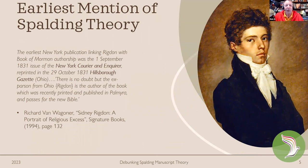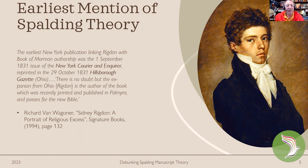The earliest mention of the Spalding Theory was in the September 1st, 1831 issue of the New York Courier and Inquirer. It was reprinted on October 29th, 1831 in the Hillsboro Gazette in Ohio. The newspaper article said, 'There is no doubt that the ex-parson from Ohio,' referring to Sidney Rigdon, 'is the author of the book which was recently printed and published in Palmyra and passes for the New Bible.' This quote comes from Richard Van Wagner's biography on Sidney Rigdon, A Portrait of Religious Excess. Most of this information comes from both Richard Van Wagner and Fawn Brody.